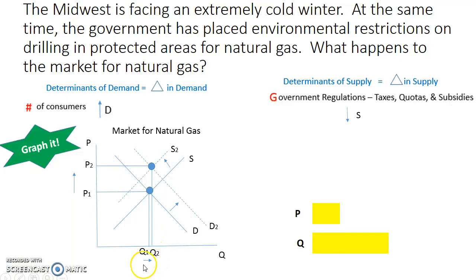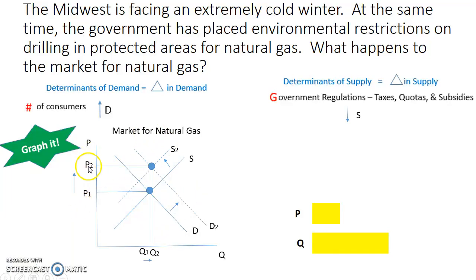When you have a situation where you are changing both the supply and demand curves, something is going to be dependent upon the magnitude of the shifts. In this case it's going to be quantity, because the decrease in supply and the increase in demand are both automatically causing price to go up. But quantity is not really changing much, and so that's something we call indeterminate — or also ambiguous.